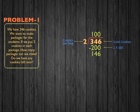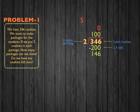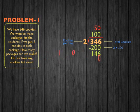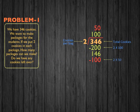Now, how many packages of two cookies can go into 146? Well, 50. Because 50 times 2 equals 100. So 146 minus 100 equals 46 cookies.